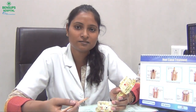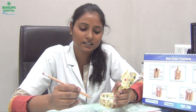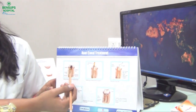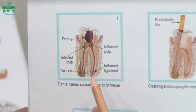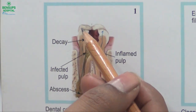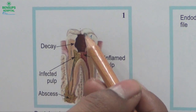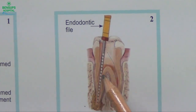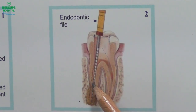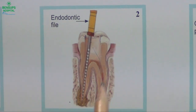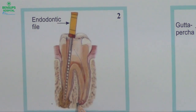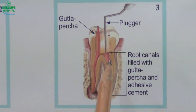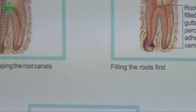Root canal treatment is a procedure done when the caries has reached the pulp, which carries the nerves and vessels. Once it reaches the pulp, it produces infection — periapical infection — and we do a simple access opening. We get access to the canals directly, then clean and shape the canals with the help of files — these are instruments called endodontic files. After cleaning and shaping the canals, we fill them with a plastic material and then seal it with a permanent filling.